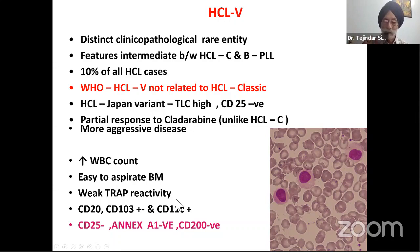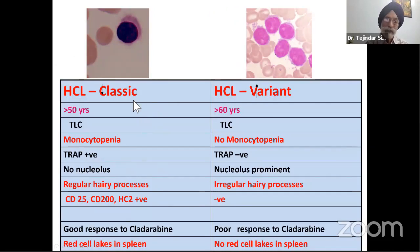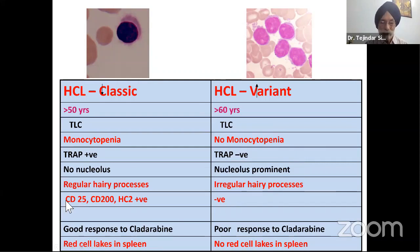How to differentiate on flow cytometry: the variant cells are CD25 negative. On immunohistochemistry, they are annexin A1 negative. On flow, they are also CD200 negative. That is how we differentiate between hairy cell variant and hairy cell leukemia. In classical hairy cell leukemia there is monocytopenia, while in the variant there is no monocytopenia. In the spleen, red cell lakes are present in classical HCL but not in the variant.